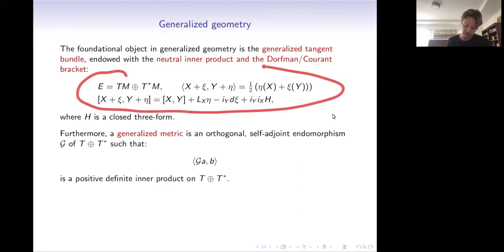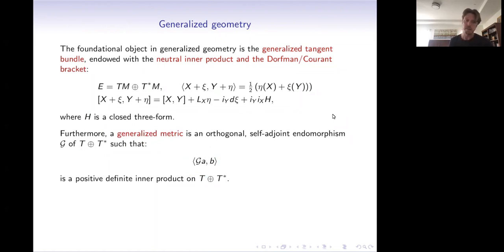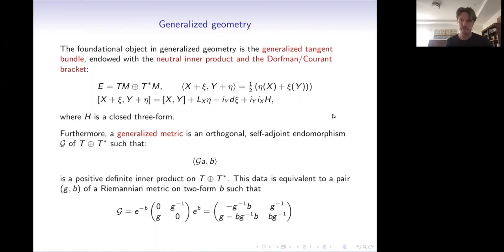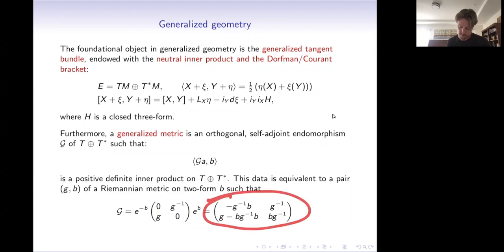A generalized metric is an orthogonal self-adjoint endomorphism of T plus T-star such that, when you lower an index with the neutral inner product, you get a positive definite inner product on T plus T-star. Unwinding the linear algebra shows these conditions are equivalent to a pair of a Riemannian metric and a two-form b. You then recover the endomorphism G as a matrix acting on T plus T-star, further conjugated by e-to-the-b — some kind of twisting of the metric by a two-form b.